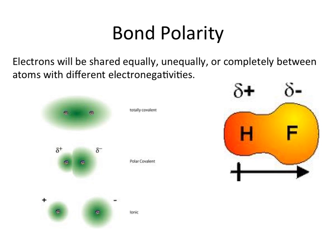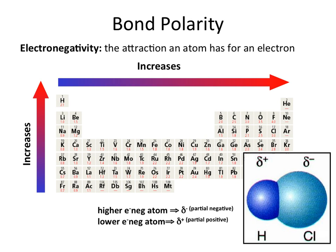Bond polarity is going to have a big impact on the overall reactivity and characteristics of specific compounds. Bond polarity is dictated by the electronegativities of atoms involved in covalently bonded molecules. The behavior of these compounds is going to be dictated quite a bit by the differences in bond polarity. As a refresher, electronegativity is the attraction an atom has for an electron in a compound. We know that fluorine is our most electronegative element on the periodic table, and the closer we get to fluorine, the more electronegative we become.